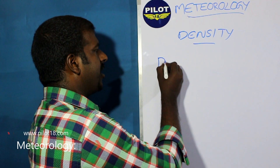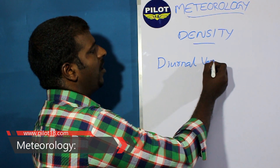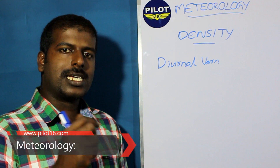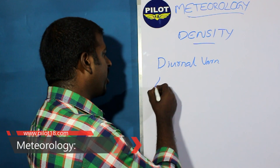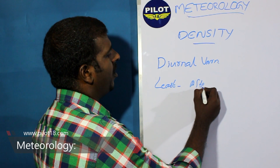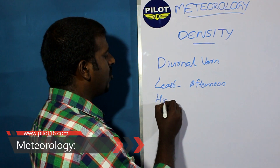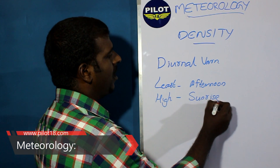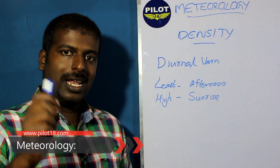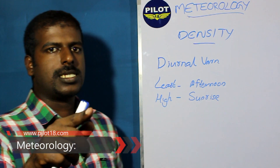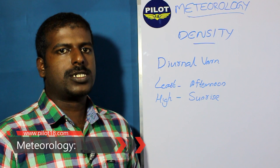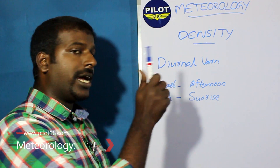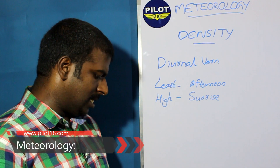There is also a diurnal variation in density. Least density occurs during the afternoon. The highest density occurs just after sunrise, when the temperature is at its least — because temperature and density are inversely proportional. Temperature directly affects pressure inversely as well, so density is also affected. Less density can be expected during afternoon, and higher density just after sunrise.